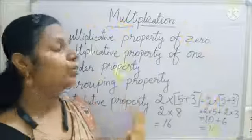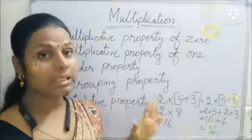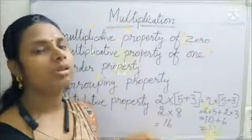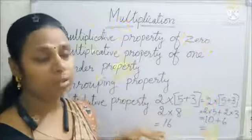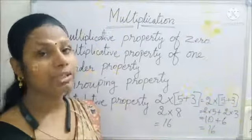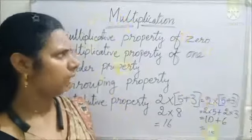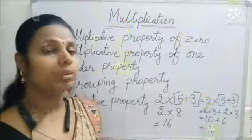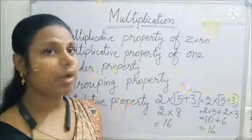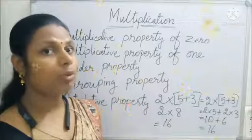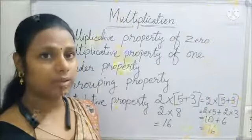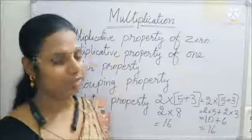These are the five properties of multiplication, which can be used to make calculations with large numbers easier. In your book we have exercise 13. In the next video I will explain how you are going to apply these properties in the exercise. Thank you.